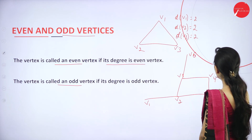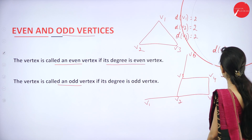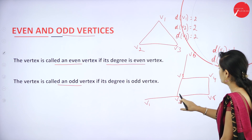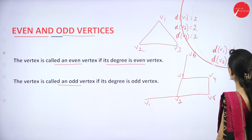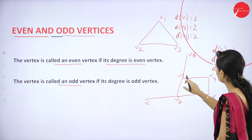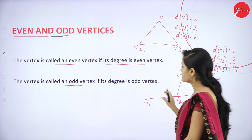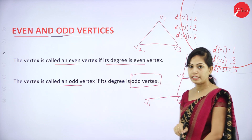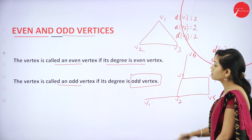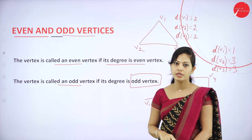So D(V1) equals 1, D(V2) equals 3, D(V3) equals 3. Since the degrees are odd, these vertices are called odd vertices. If the degree of a vertex is odd, it is called an odd vertex; if the degree is even, it is called an even vertex.